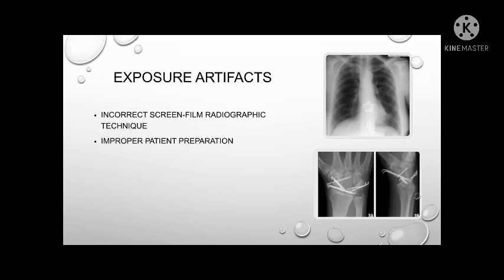Incorrect application of exposure techniques will also result in an exposure artifact. We have to be sure of which technical factors to use for the patient to avoid repetition, as this leads to another radiation exposure. Having too high MAS or KVP will result in an overexposed radiograph with little detail visible even when viewed through the negatoscope. Low MAS and low KVP may result in underexposure, with too little density to the point that almost no image can be seen.